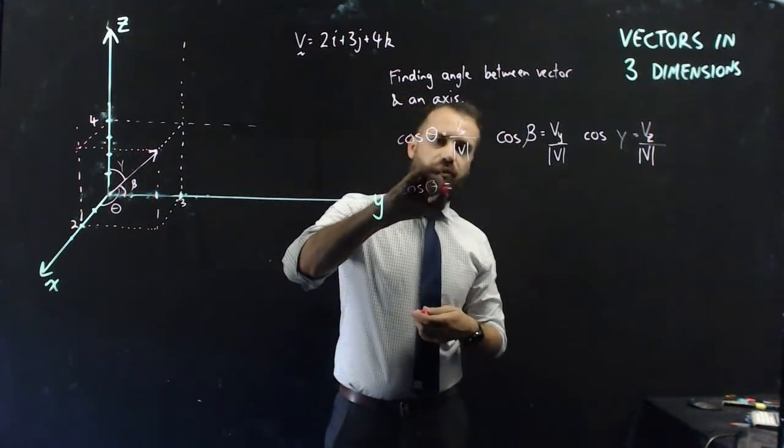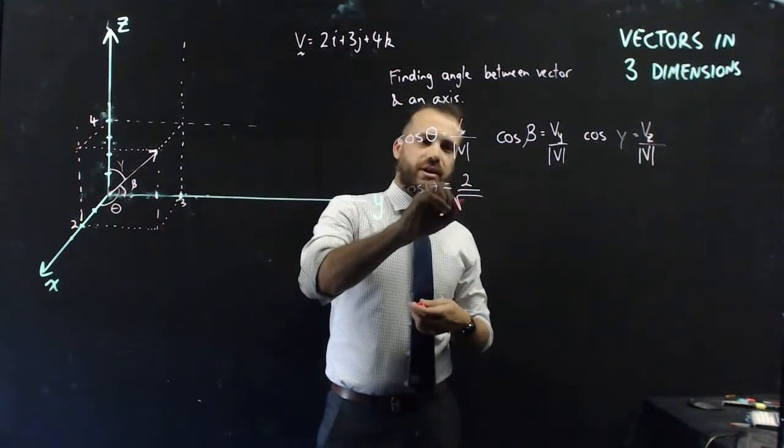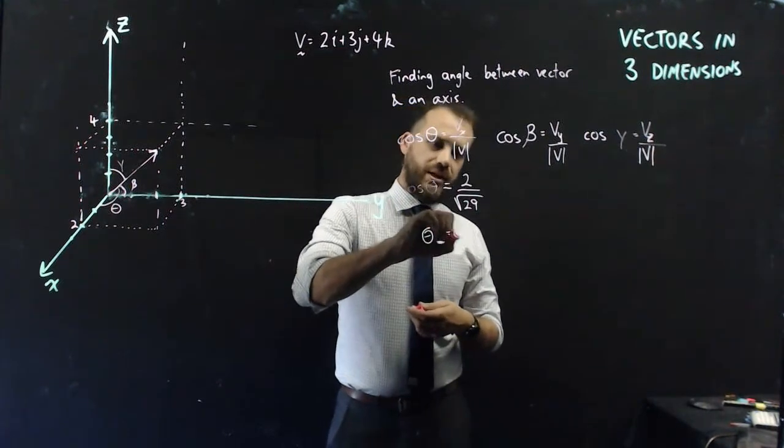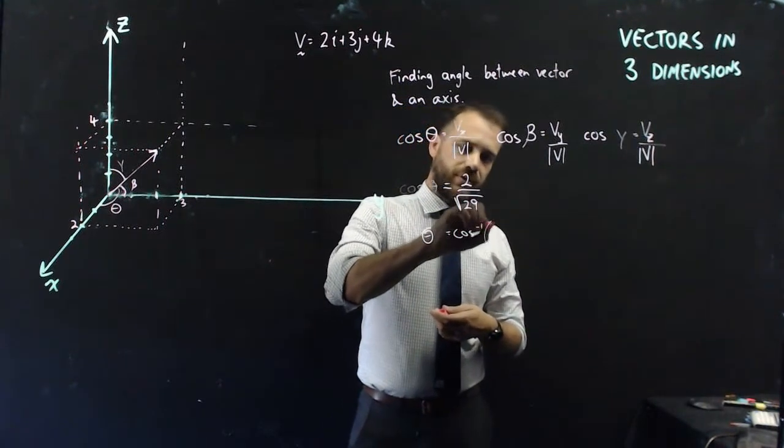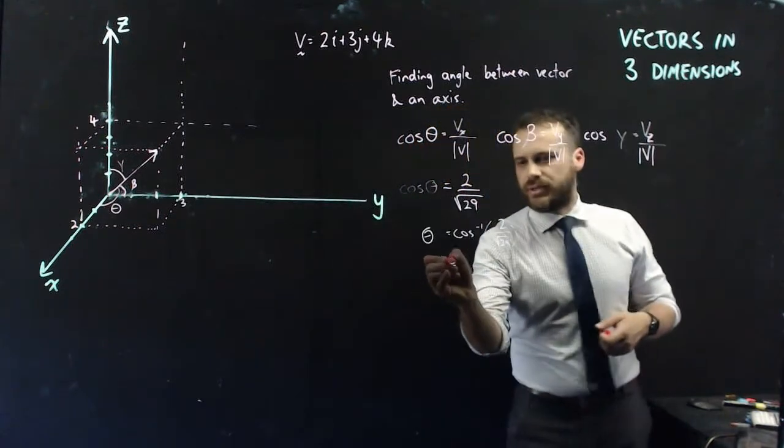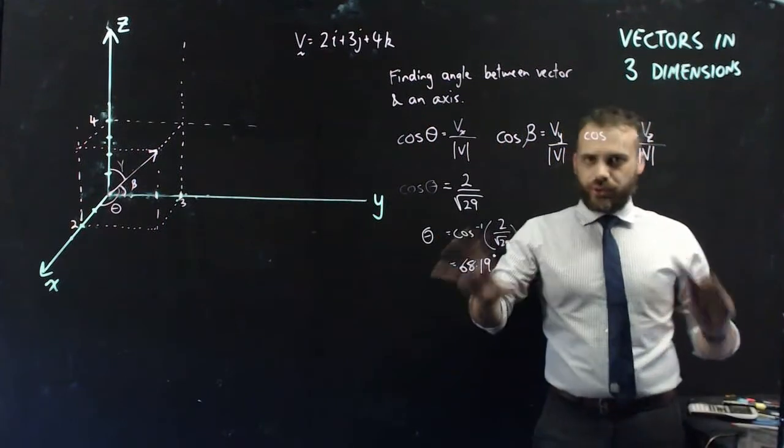So, if I wanted to find this angle, it really is as straightforward as saying, right, that's the number 2. The magnitude of that, I've already figured it out. It's root 29. And, now, theta is equal to the inverse cos of 2 over root 29. And, a calculator will easily give you an answer for that one. 68.19 degrees.